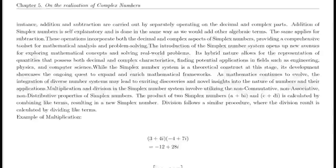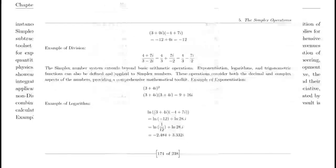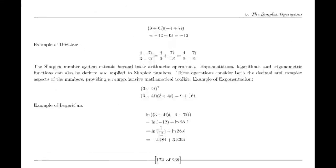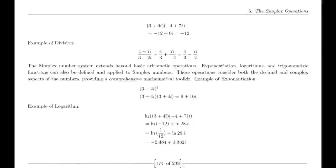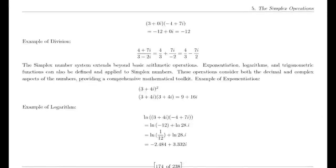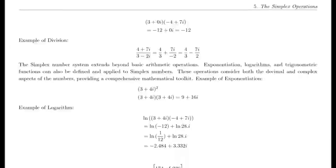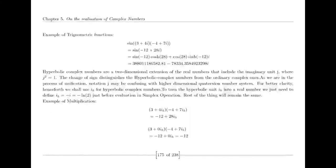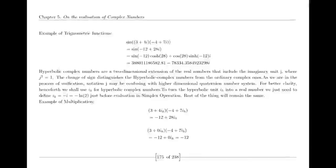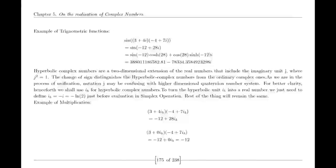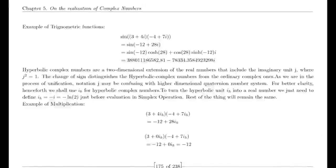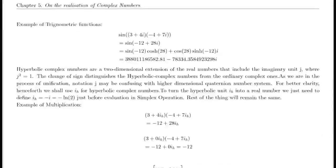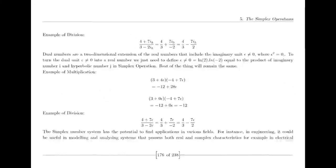The connection between Napier's logarithms, Bernoulli's limit, and Euler's number e illustrates how mathematical concepts evolve and interconnect. These innovations highlight the deep interplay between logarithms, limits, and continuous growth, paving the way for more profound discoveries, including those related to the Riemann hypothesis.